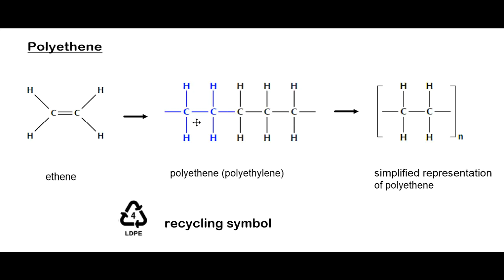When drawing the polyethene molecule, drawing the full chain every time is inconvenient and laborious. Instead, we simplify it by representing the repeating unit in brackets with N, indicating there are many repeating units. Polyethene is a plastic and has a recycling symbol — recycling number four. In this case it is LDPE, low density polyethene, used to make plastic products like squeeze bottles.